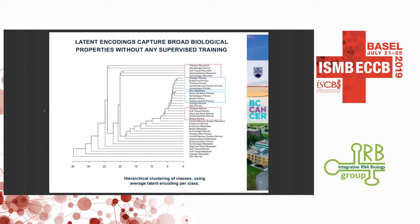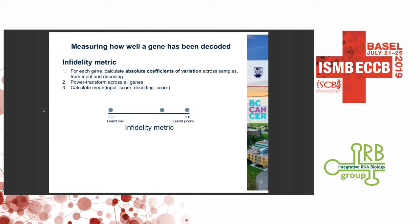Going back to the encodings: we took the average encoding for every TCGA category, put it into hierarchical clustering, and reassured ourselves that broad biological trends were captured — primary cancers cluster together and normal tissues cluster together. But more interesting was the decoding space — how well genes are recapitulated by the model. The metric we used was the absolute coefficient of variation for a given gene across all samples in the input space and in the decoding space, calculated separately. We power-transform across all genes to produce an approximately standardized score for each gene in both input and decoding, then make a composite score called the infidelity metric. A low infidelity means the gene was learned really well; a high infidelity means the gene was not learned well by the model at all.